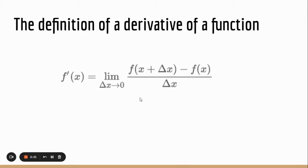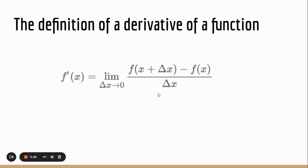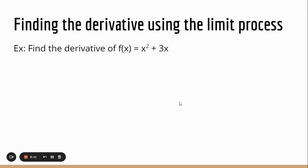Before we get into the actual math, let's see a couple of other ways derivatives can be written. We just saw f prime of x, but it might be written as dy/dx — the derivative of y with respect to x — or as y prime, d/dx of f(x), or Dx y. If we see any one of these, we know we're talking about the derivative. Now let's come back to our definition and use it to find the derivative of a specific function, which will give us the slope of the tangent line. The example is f(x) = x² + 3x, and we'll use the limit definition to find it.